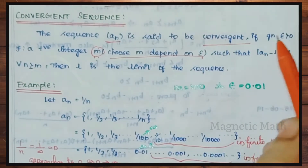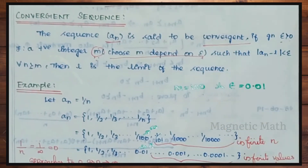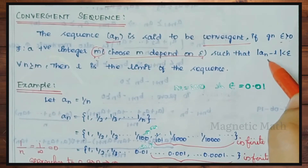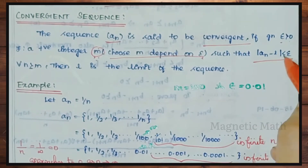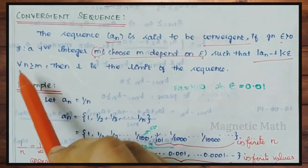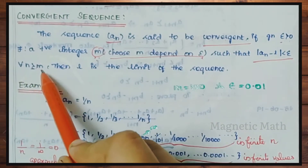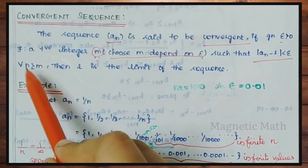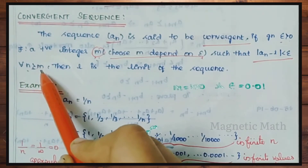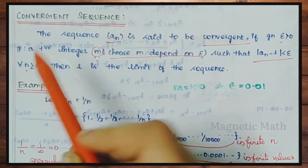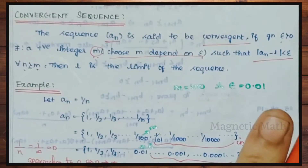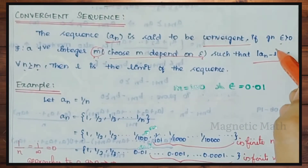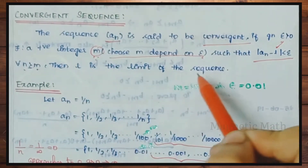So this is the result of the sequence. If the condition is satisfied, then modulus of an minus L is less than epsilon for all n greater than or equal to m. If the condition is satisfied, this is the limit of the sequence.